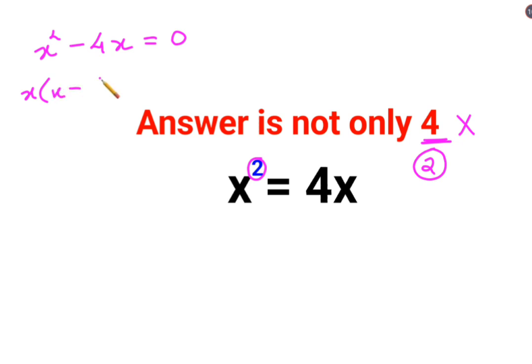So I will say either x is equal to 0 or we can say x minus 4 equals to 0, so here we'll say x equals to 4. So here we can say that yes, value of x is either 4 or 0.